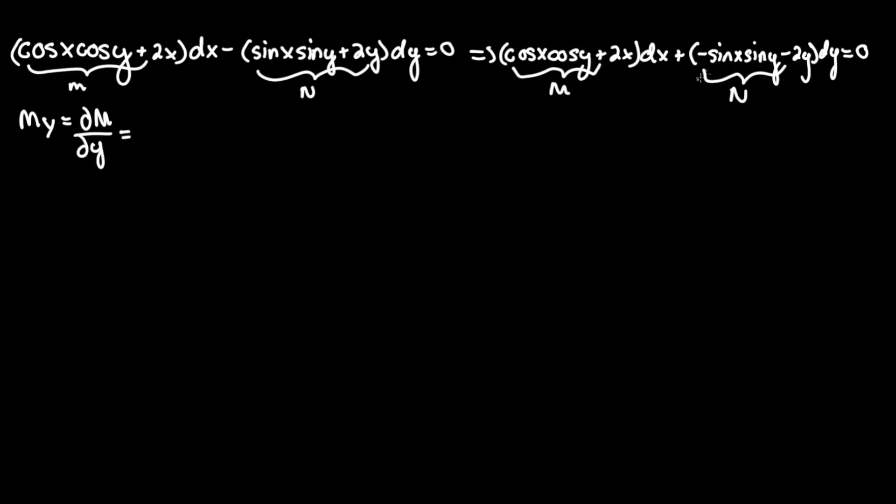And this equals, let's see, cosine x is a constant and we are differentiating cosine y. The derivative of cosine y is negative sine y, so we'll have cosine x times negative sine y. And the derivative of 2x with respect to y is just 0. So that is all what the partial derivative of M would be.